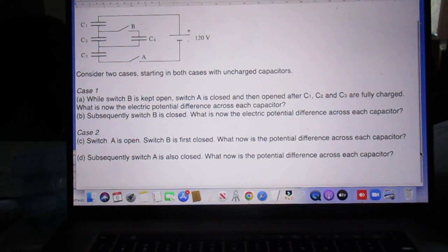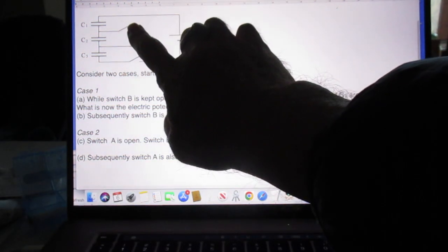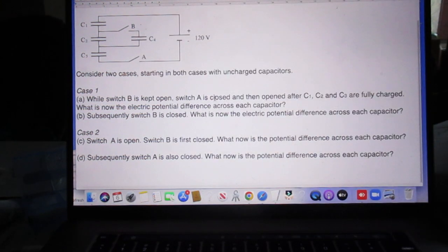Starting in both cases with uncharged capacitors. That's very important. Case one. While switch B is kept open, so this one is kept open, switch A is closed. So B remains open and then A is closed. And then A is opened after C1, C2 and C3 are fully charged. First question. What is now the electric potential difference across each capacitor? Of course, I also want signs, pluses and minuses.